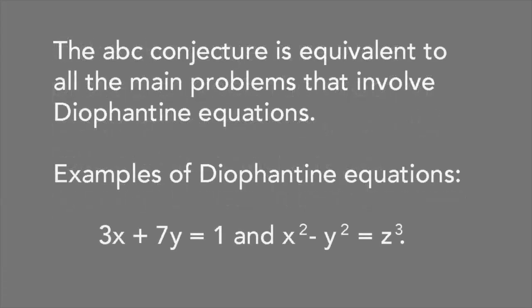The ABC conjecture is quite simple to state compared to most of the deep questions in number theory. What's more, it turns out to be equivalent to all the main problems that involve Diophantine equations. These are equations with integer coefficients and integer solutions.